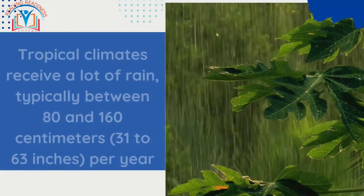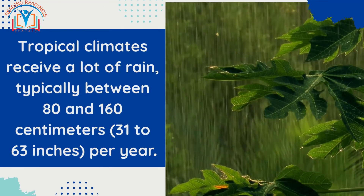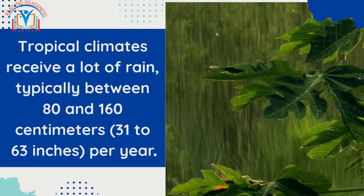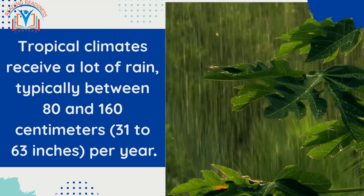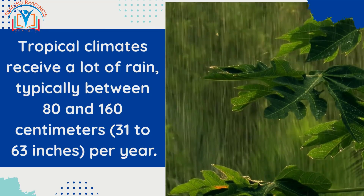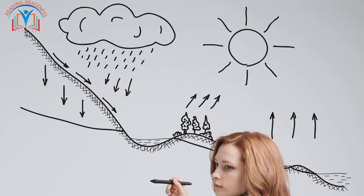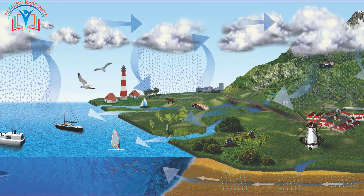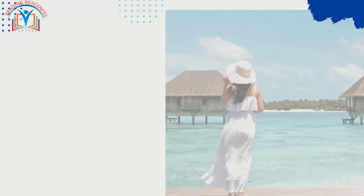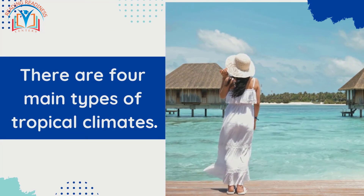Tropical climates receive a lot of rain, typically between 80 and 160 centimeters — 31 to 63 inches — per year. The rain is caused by convection, which is the process of warm air rising and cooling. As the air cools, it releases moisture, which falls as rain. There are four main types of tropical climates.